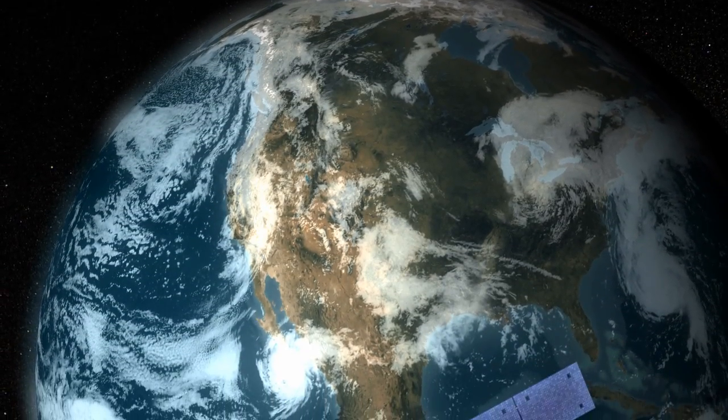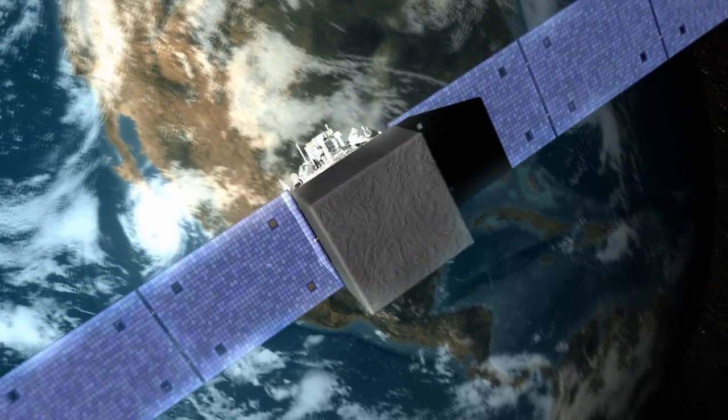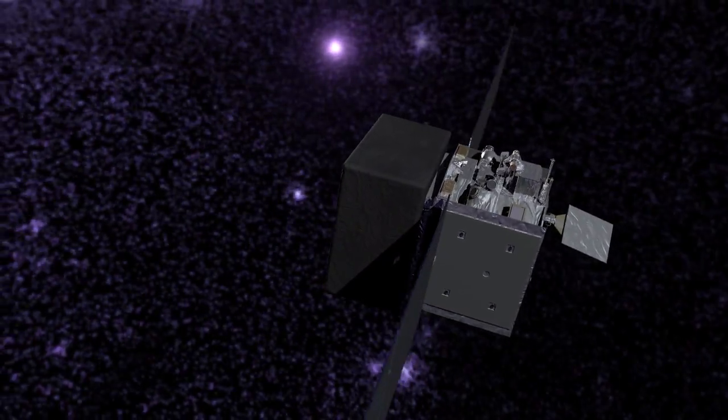The Fermi Gamma-ray Space Telescope is a powerful space observatory that opens a wide window on the universe. Gamma rays are the highest energy form of light, and the gamma-ray sky is spectacularly different from the one we perceive with our own eyes.